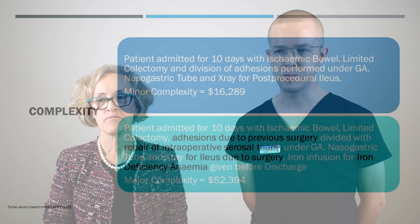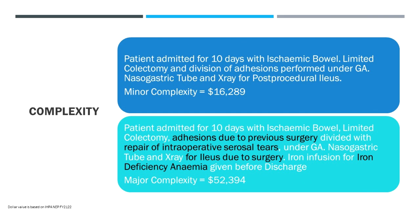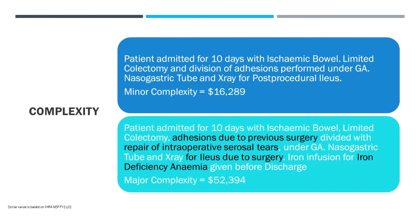All of those are going to add, so it's actually happening, it's whether we're writing it and capturing that data. Absolutely, we're doing the work so let's document it so we can see it. Here's a multi-factor example of that just again reinforcing. So same kind of scenario, 10 days, ischemic bowel. I think it's the same patient actually, very similar. Limited colectomy and division of adhesions performed under general anesthetic. Okay so far. Nasogastric tube and x-ray for post-procedural ileus. Again, oh post-procedural, we know that one is not a good relating term. Comes out of minor. Now let's just tweak that wording a little bit to better reflect what happened. We've got adhesions due to previous surgery, just a few extra words there.